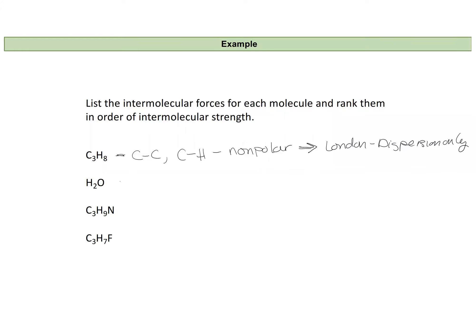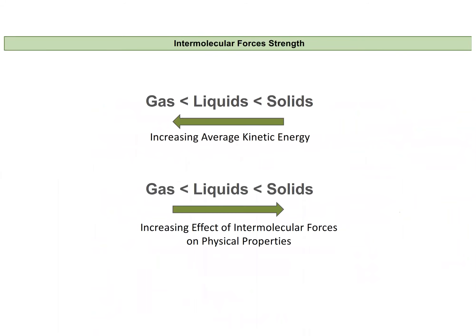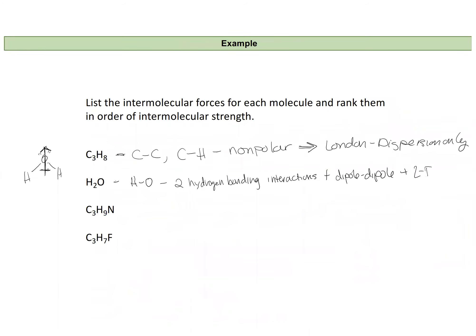The next molecule is water, which we've already discussed. Anything like this will have hydrogen-oxygen bonds without even needing to build the Lewis dot structure. We can see it has two hydrogen bonding interactions. Drawing the Lewis dot structure shows it also has an overall dipole moment, based on the lone pairs that create bent geometry, giving it dipole-dipole interactions. And since it has electrons, it also has London dispersion forces.